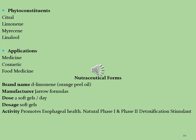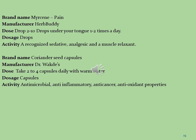Pharmaceutical brands using terpenes as phytoconstituents: the first brand is D-Limonene with orange peel oil, manufactured by Gaia Formulas, two soft gels per day in soft gel capsule form, used to promote esophageal health and as a natural phase one and phase two detoxification stimulant. The second brand is Myrcene Pain, manufactured by Herb Body Nutraceuticals, two to ten drops per day in drop form, used as a sedative, energetic, and muscle accent. The third brand is Coriander Seed Capsules, manufactured by Dr. Wackett's Nutraceuticals, two to four capsules daily with warm water in capsule form, used as antimicrobial, anti-inflammatory, anti-cancer, and antioxidant.